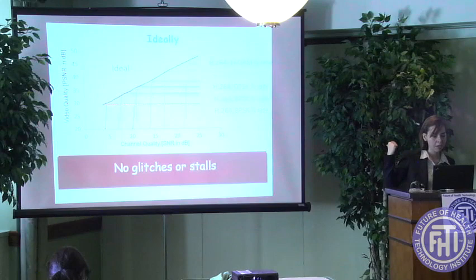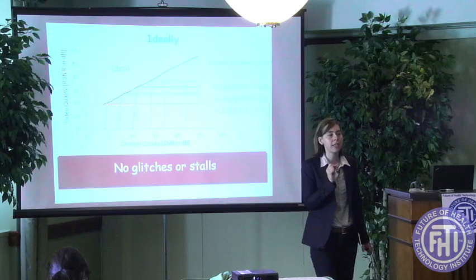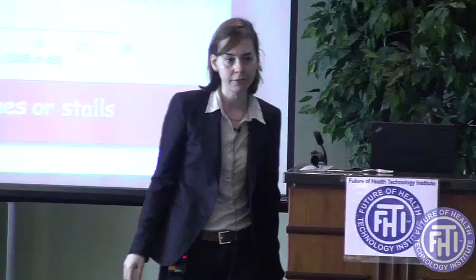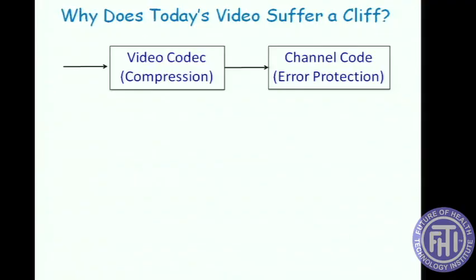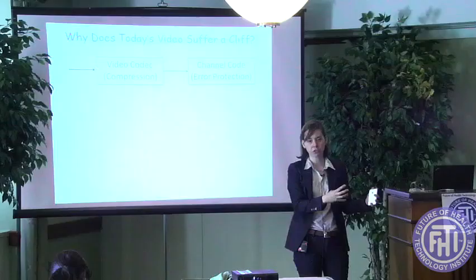The natural question to ask is: how can we achieve this? But before I can tell you how, let me explain why today's video suffers this cliff effect. Today's video has two components: there is the video codec, which compresses the video, and there is the error correcting code, which protects your video as you transmit it over the erroneous wireless channel.